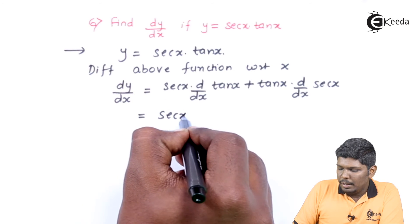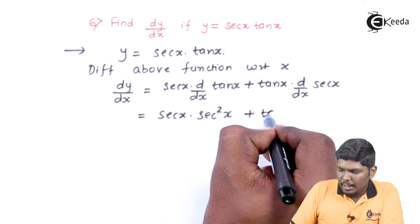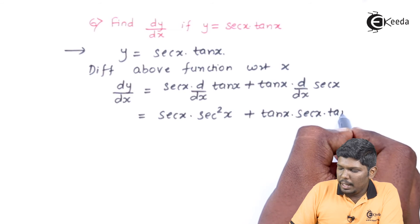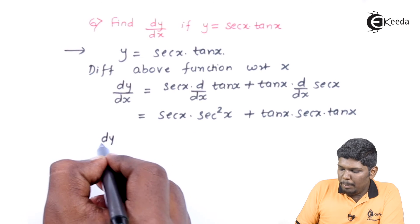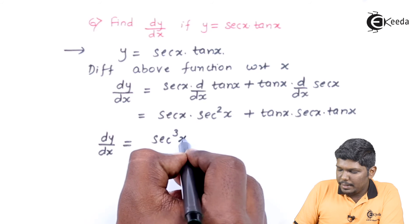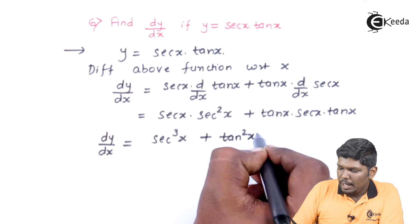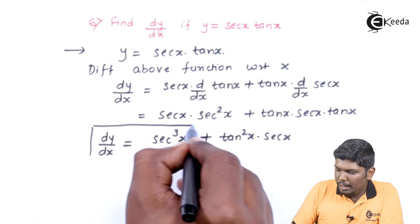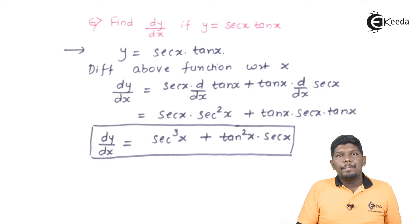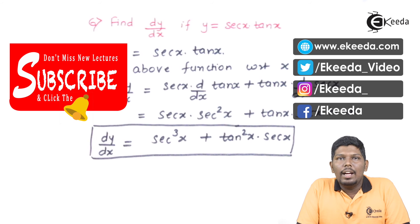sec x into the derivative of tan x, which is sec squared x, plus tan x into the derivative of sec x, which is sec x into tan x. The final answer dy/dx can be written as sec x into sec squared x, giving sec cubed x, plus tan x into tan x into sec x, giving tan squared x into sec x. This is the derivative of the given function y equals sec x into tan x. I hope you have understood this video. Thank you for watching. Stay tuned with Ikeda and subscribe.